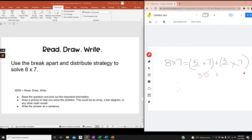And what's 3 times 7? We can count by 3 seven times. 3, 6, 9, 12, 15, 18, 21. So now I can say that 8 times 7 equals the sum of 35 and 21. So 5 plus 1 is 6, and 3 plus 2 is 5. So 8 times 7 equals 56.